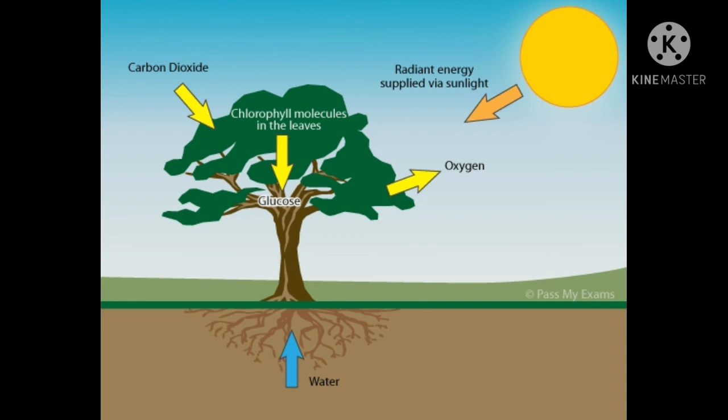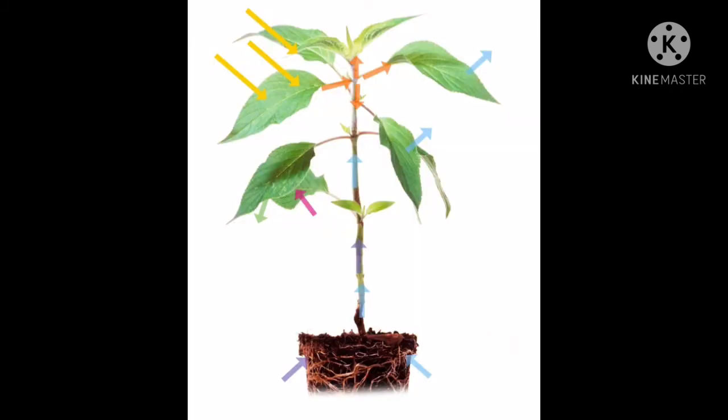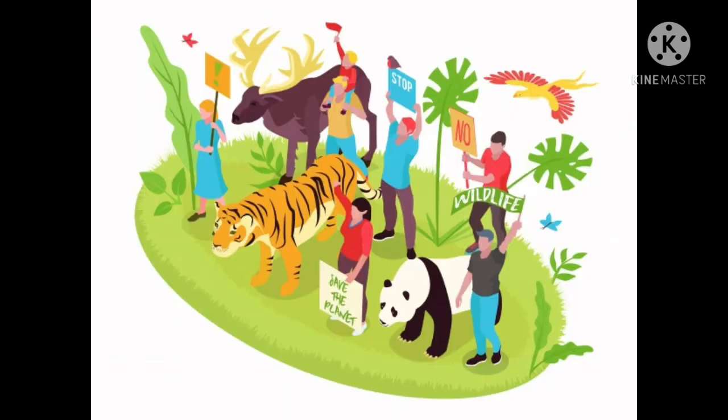As plants prepare food for themselves and also for other living things, they are called primary producers. Without primary producers, living things that are not capable of producing their own food would not be able to live.